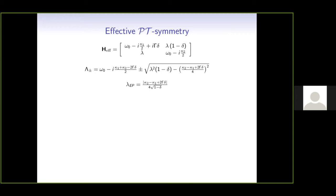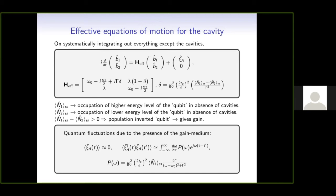A question was raised: in the previous slide, why does the noise P(omega) depend only on N1? The answer is: it just turns out that way from the derivation.